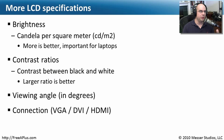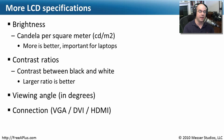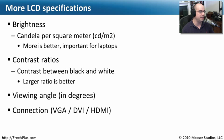LCD displays don't use ambient room light, and the crystals themselves don't brighten. We actually have lights behind the display sending light through it, coming through the polarized filters and out through the different pixels. There are different ways to light the back of an LCD screen — these days mostly with LEDs, but older technologies use fluorescent backlights.